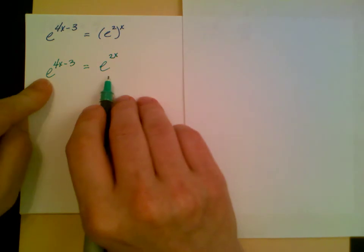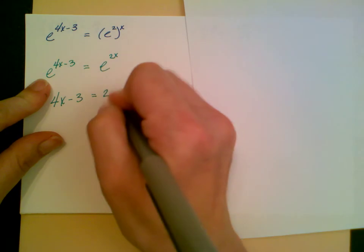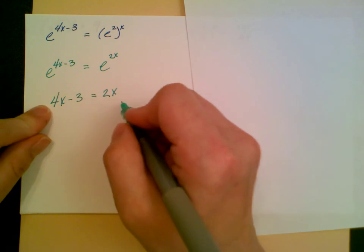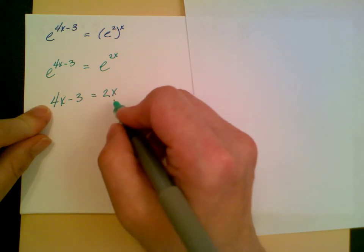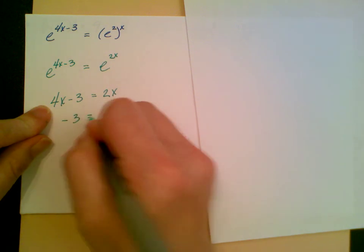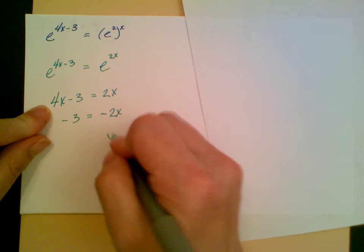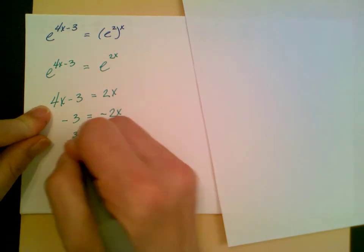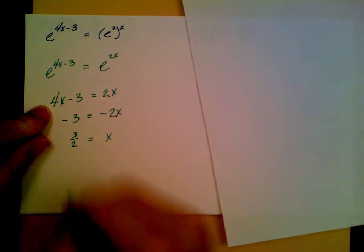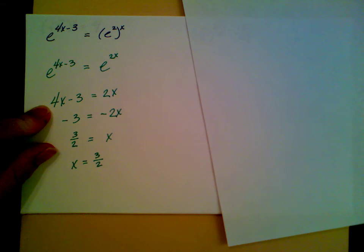Now I can set my exponents equal to each other. I can subtract the 4x over here, divide by negative 2, and x is equal to a positive 3 halves. Oftentimes, people just feel more comfortable when I have the x on the left-hand side.